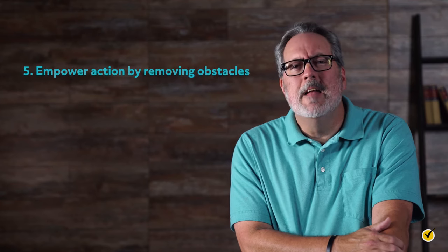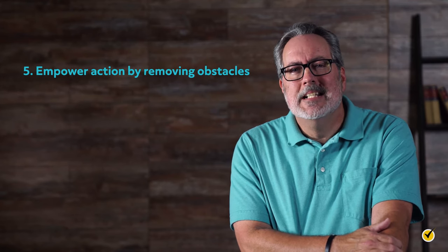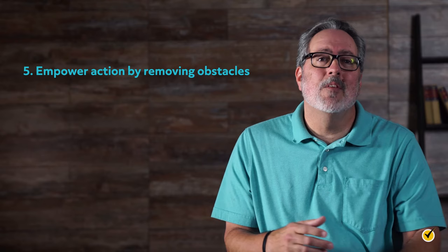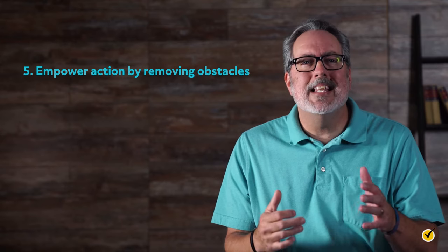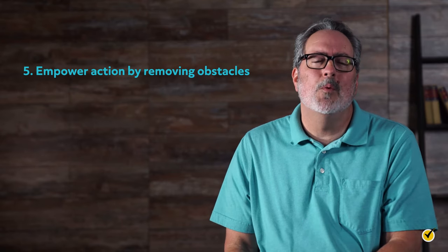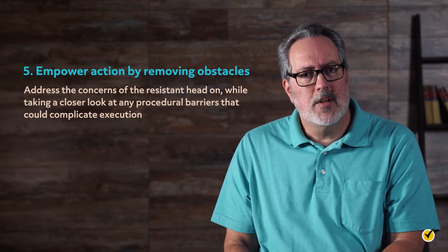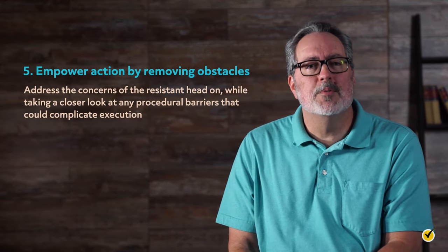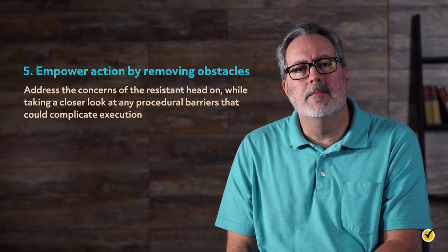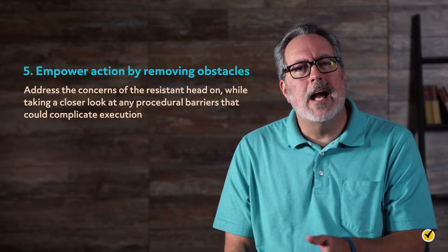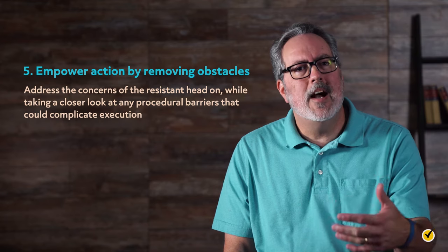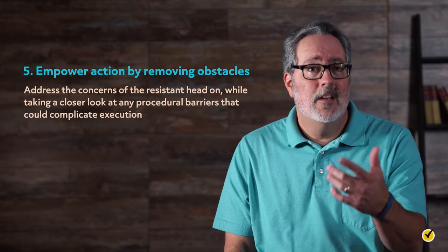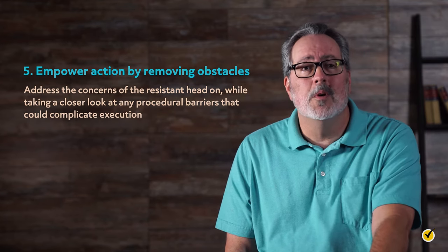Five, empower action by removing obstacles. This is the stage where you can identify those who are resistant as well as any additional obstacles that are standing in the way of the change. Address the concerns of the resistant head-on while taking a closer look at any procedural barriers that could complicate execution. Encourage those who are doubtful and resistant to identify and help remove those barriers. You may get lucky and kill two birds with one stone.